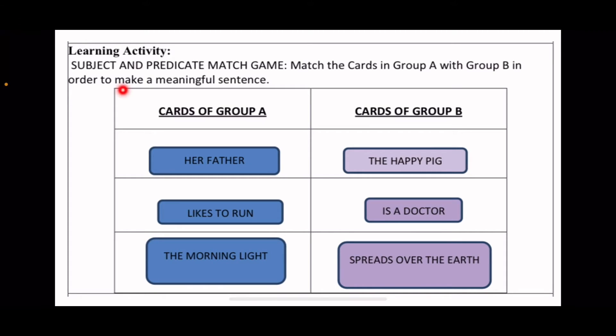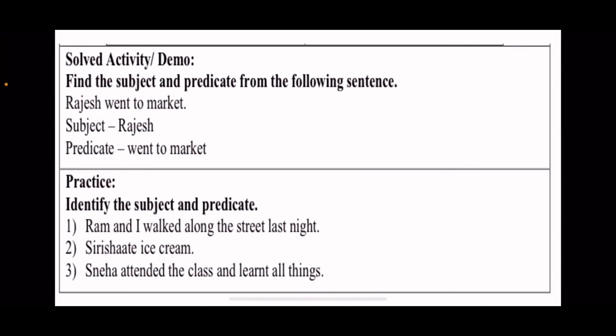Here is the subject and predicate match game. Match the cards in group A with group B in order to make meaningful sentences. Group A and group B: her father, likes to run, the morning light, the happy pig, is a doctor, spreads over the earth. You need to make a meaningful sentence by matching groups A and B.